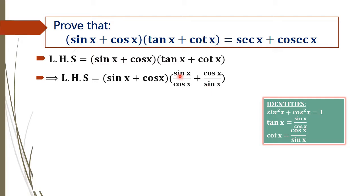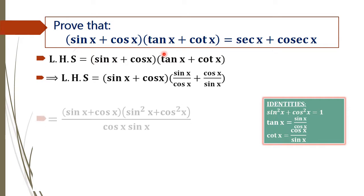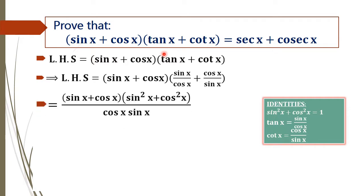That is sin x times sin x becomes sin²x and cos x times cos x becomes cos²x, all divided by cos x · sin x. That is (sin x + cos x) into (sin²x + cos²x), all divided by cos x · sin x.